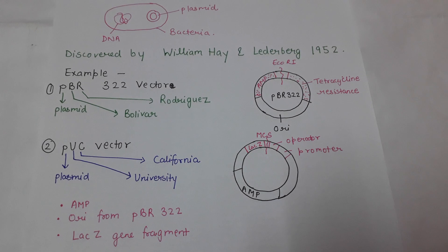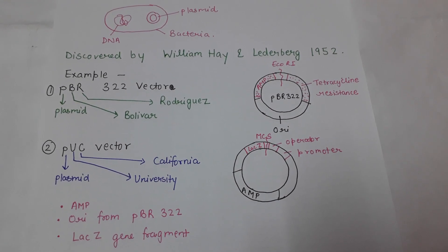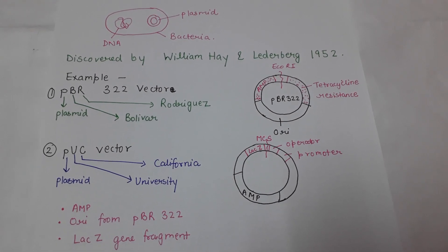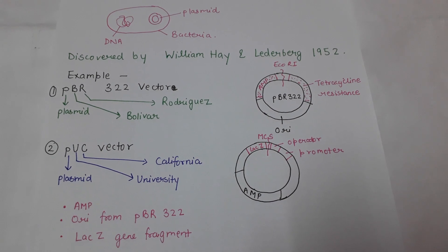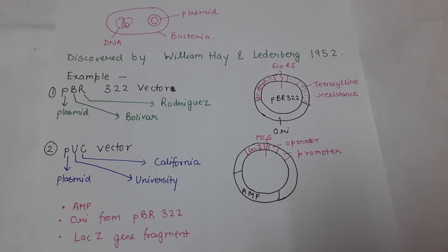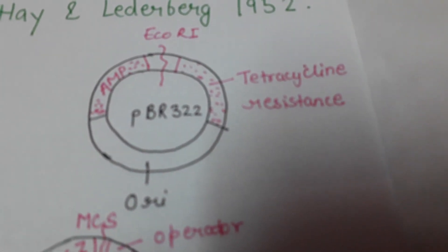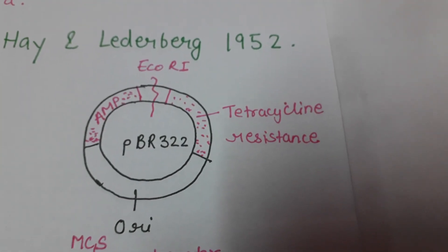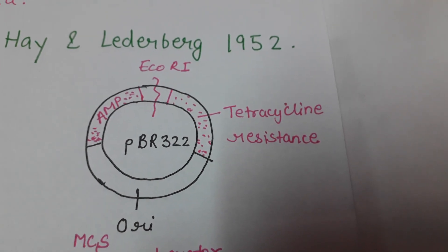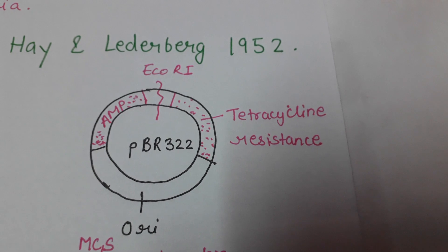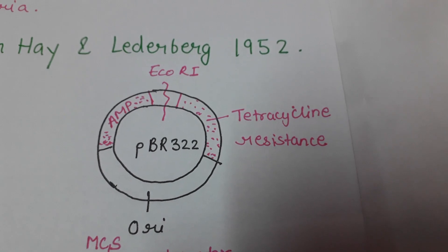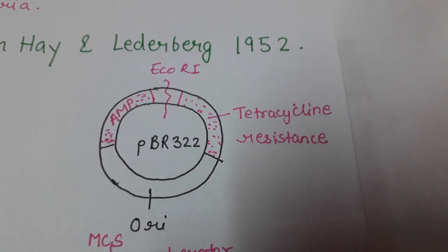An example of a plasmid used in recombinant DNA technology is the pBR322 vector. Its name comes from: p for plasmid, B for Bolivar, and R for Rodriguez — the scientists who constructed it. The pBR322 vector has an origin of replication, an ampicillin resistance gene, a tetracycline resistance gene, and restriction sites, as shown in the diagram.